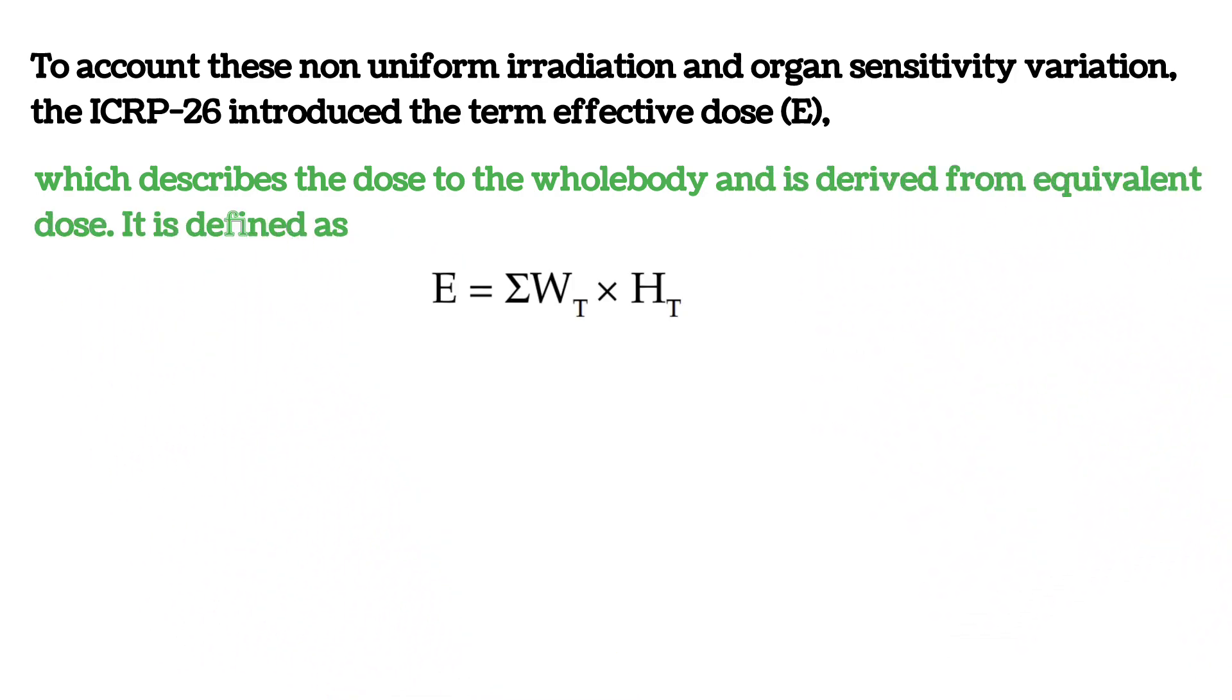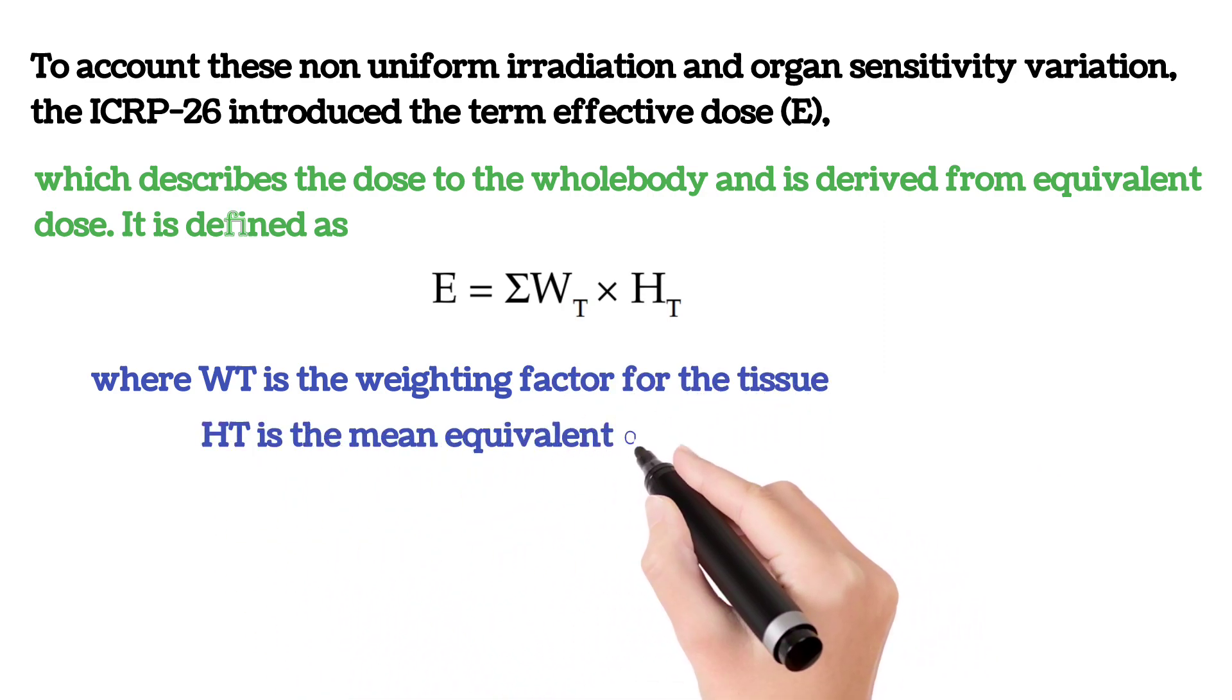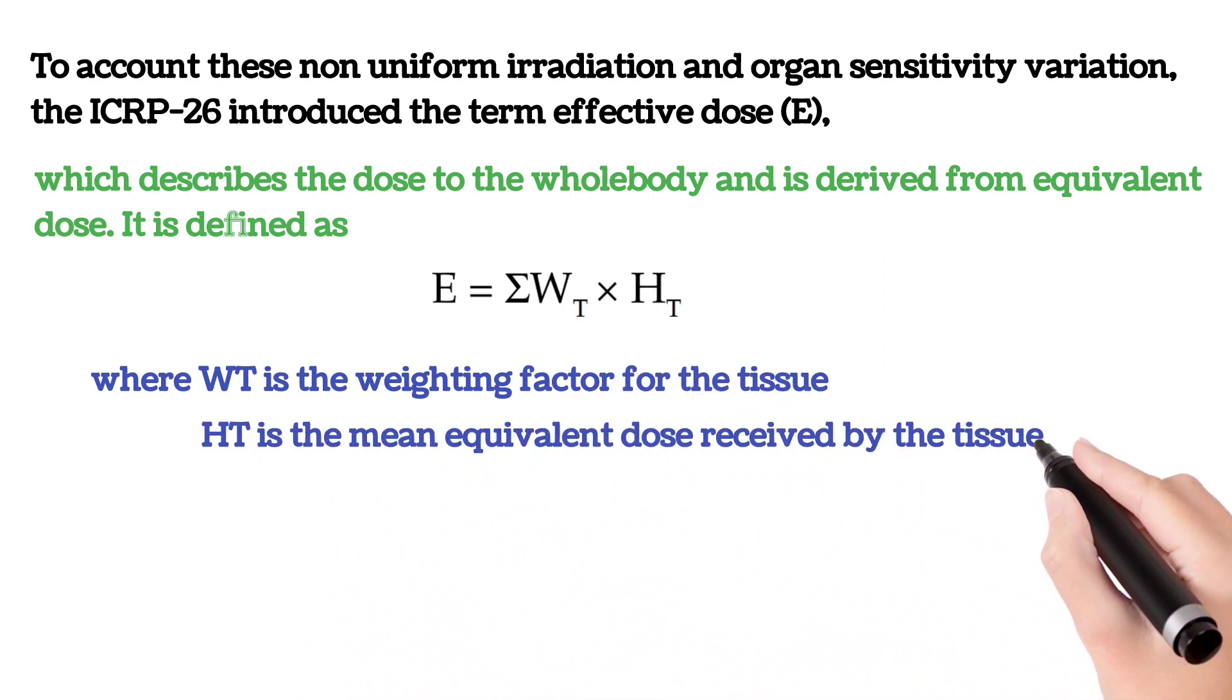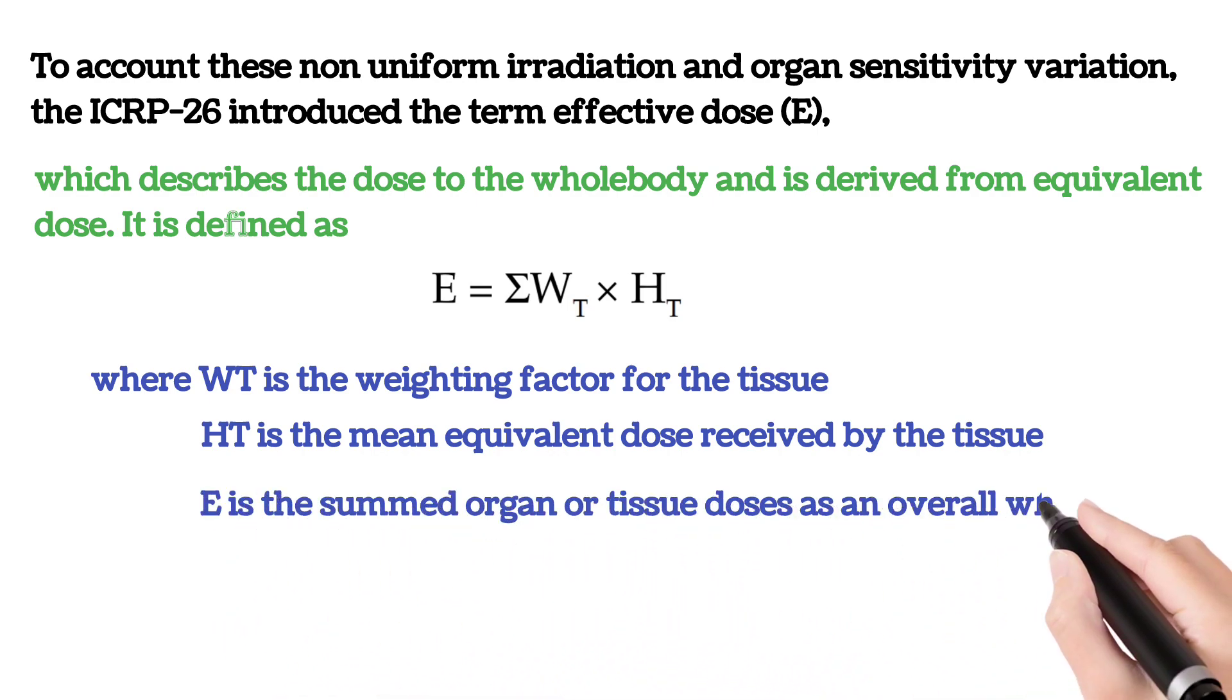It is defined as equivalent dose multiplied by tissue weighting factor, where Wt is the weighting factor for the tissue, Ht is the mean equivalent dose received by the tissue, and the summed organ or tissue doses give an overall whole body dose.